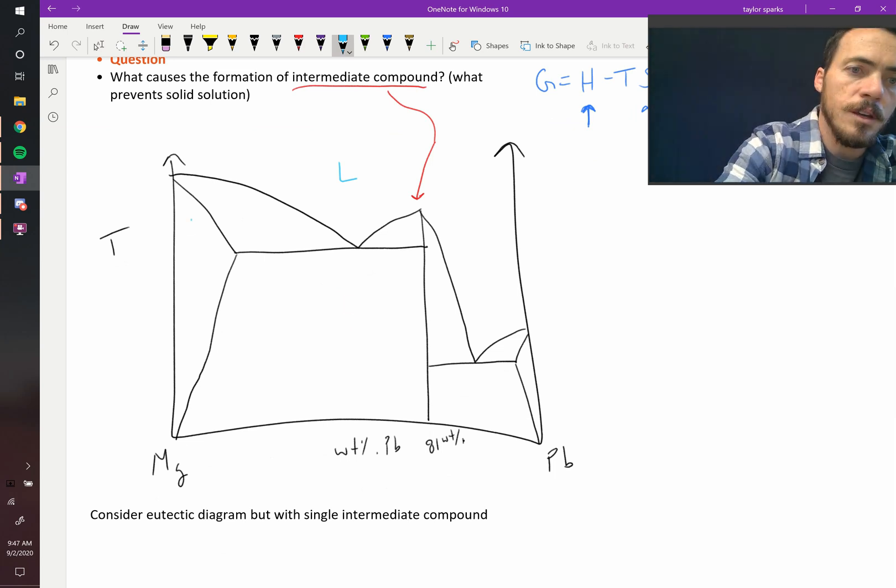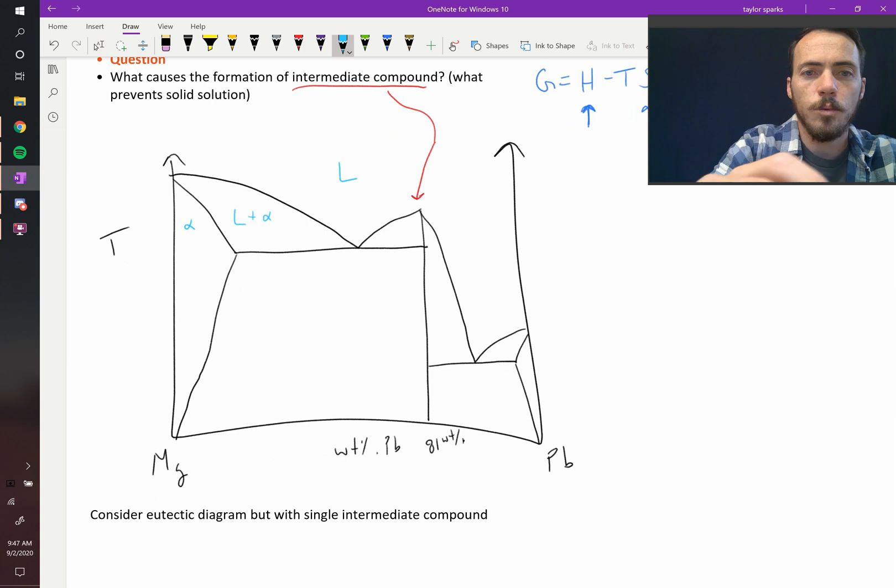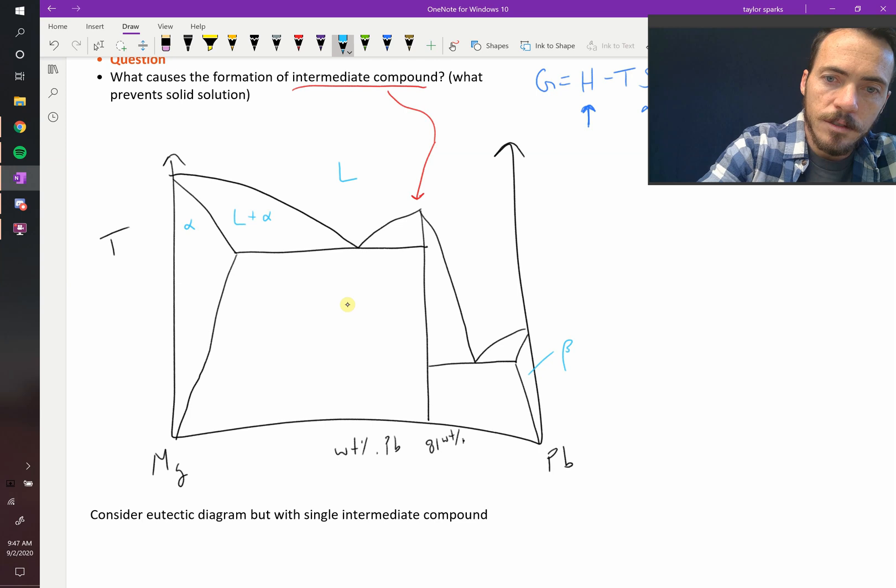So let's go ahead and label this diagram. Up top, we're going to know that it's liquid, so up here it's liquid. So using the 1, 2, 1, 2, 1 rule, this must be alpha over here so that this can be liquid plus alpha. So let's label this phase over here, this one's going to be our beta phase, which makes this right there liquid plus beta.